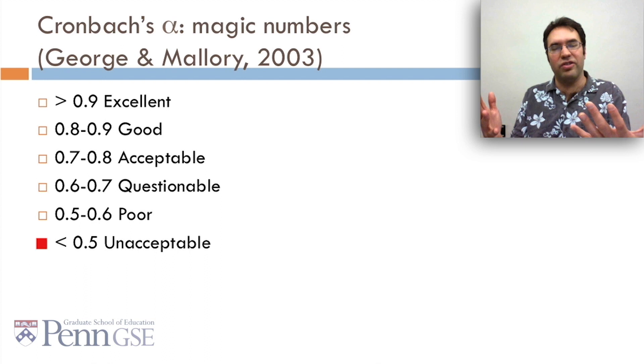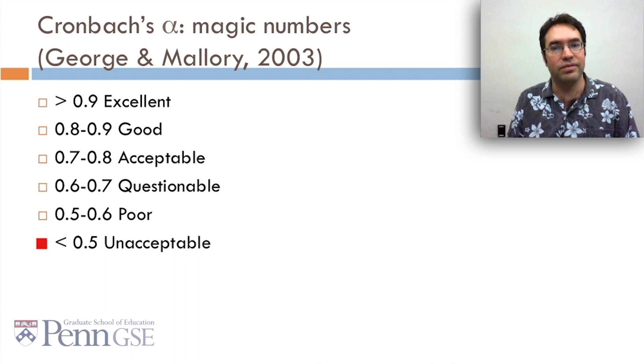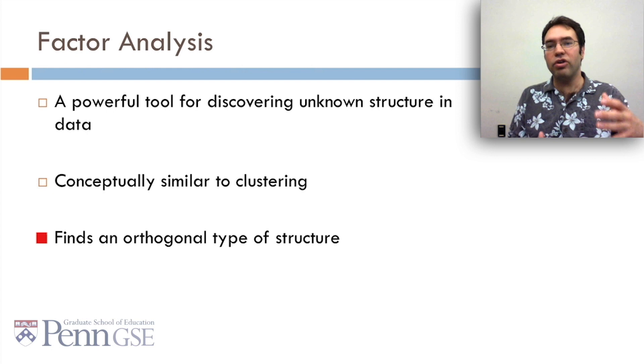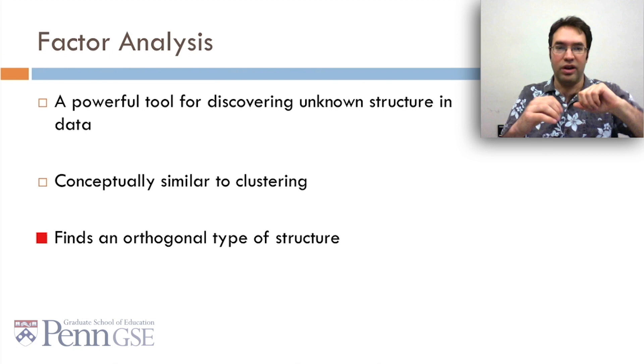So factor analysis. It's a powerful tool for discovering unknown structure in data. It's conceptually similar to clustering, but it finds an orthogonal type of structure. Clustering finds structure and commonality within data points, the rows often in your data set. And factor analysis finds commonality and structure in your columns, in your variables. Great. So that wraps up our discussion of factor analysis. In the next lectures, we'll talk about knowledge structures.